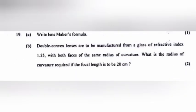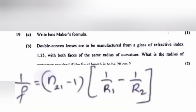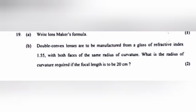Question 19 A: Write lensmaker's formula. B: Double convex lenses are to be manufactured from a glass of refractive index 1.55 with both faces of the same radius of curvature.